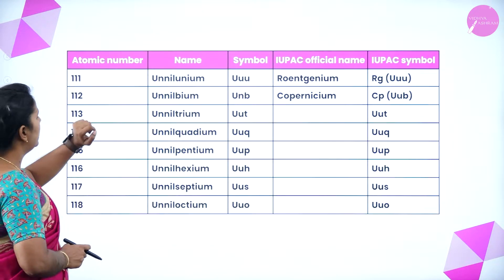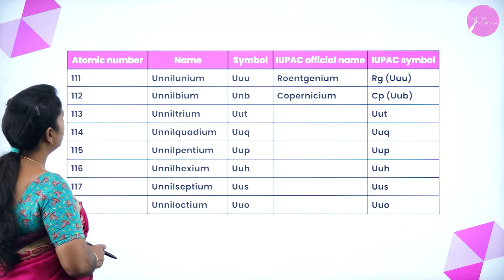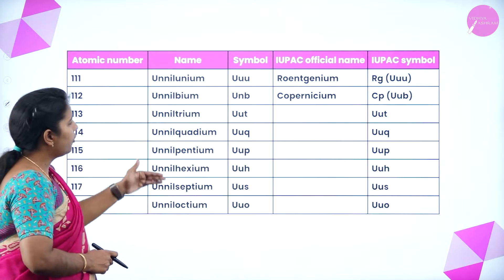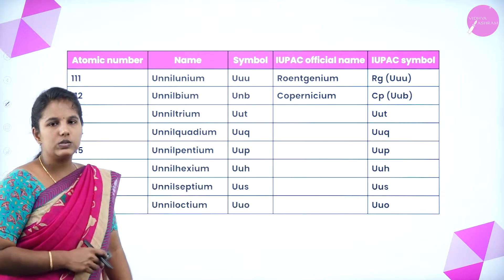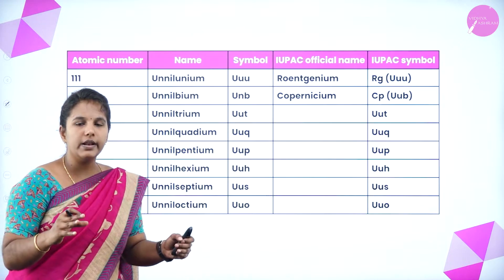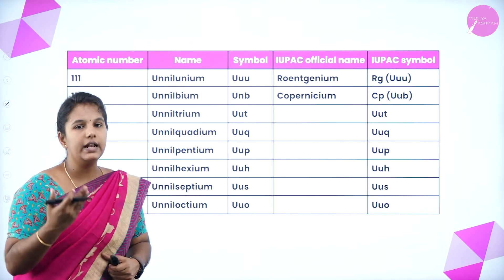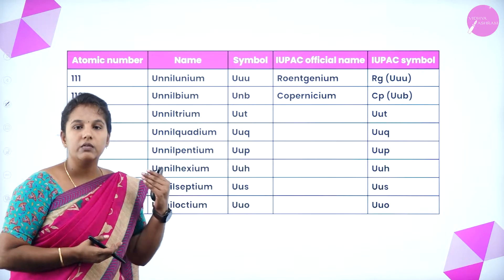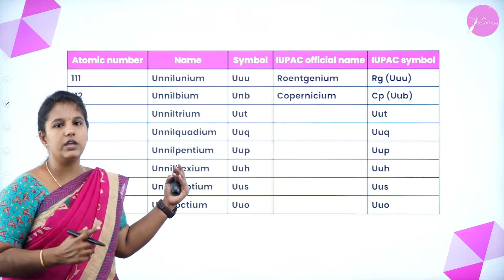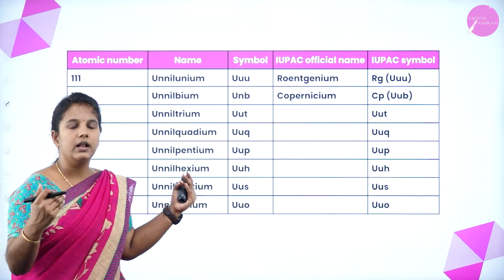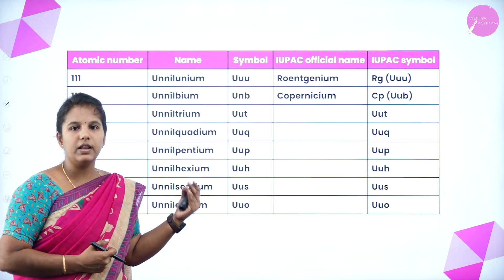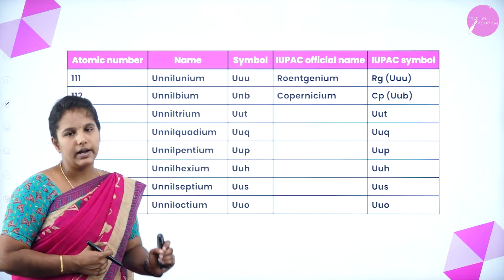For atomic number 111: un, un, un → unununium. For 112: un, un, bi → ununbium. Then similarly for 113 through 118, using tri, quad, pent, hex, hept, and oct respectively, always ending with -ium. It is very simple and you can learn it easily. That concludes the nomenclature of elements with atomic numbers greater than 100.